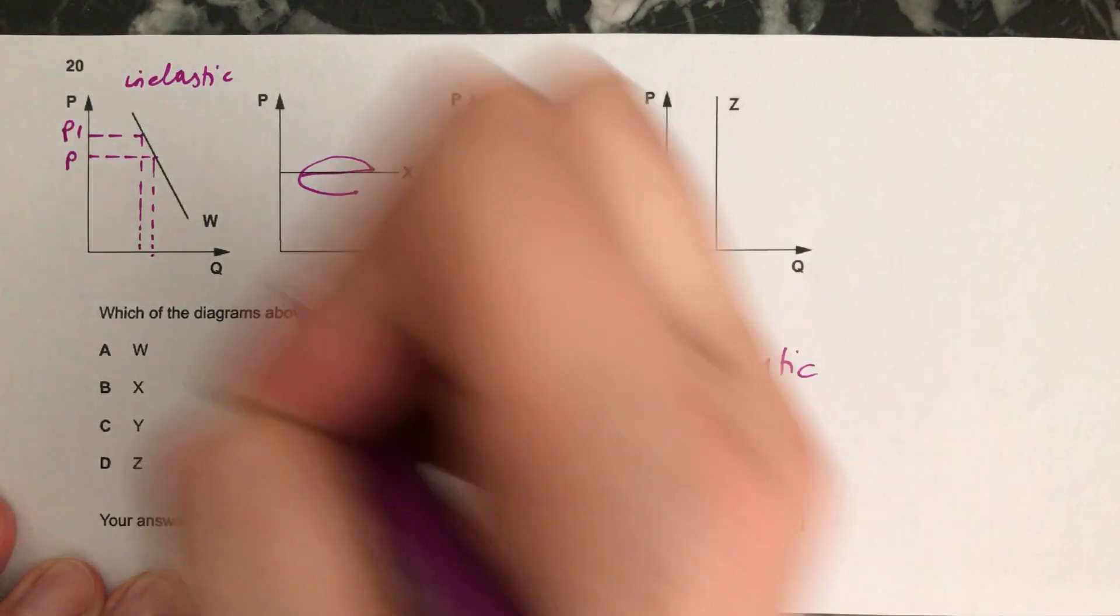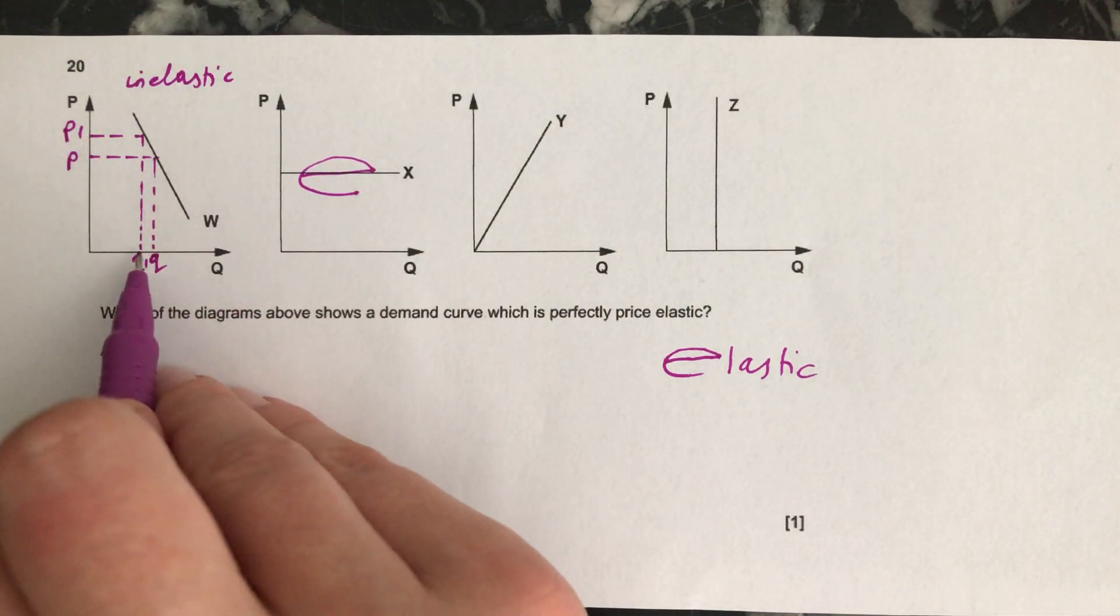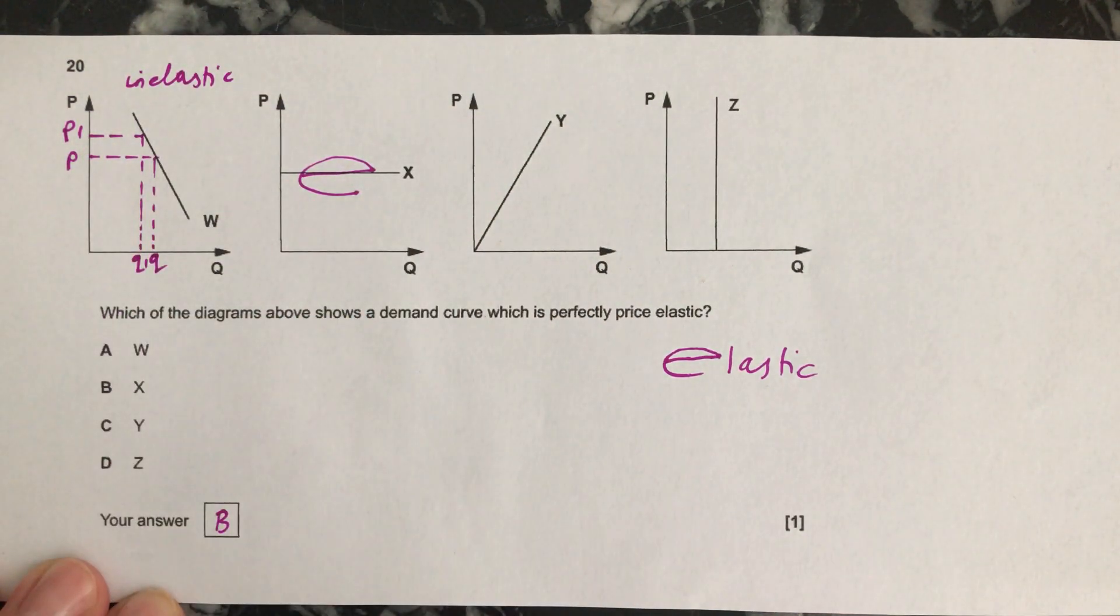I see here that it does because imagine that the price goes up from P to P1, the quantity has gone from Q to Q1. This is bigger than this, so this is inelastic. This one we know is perfectly price elastic.